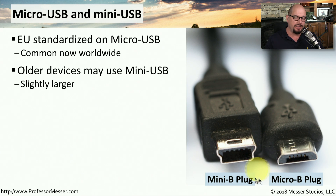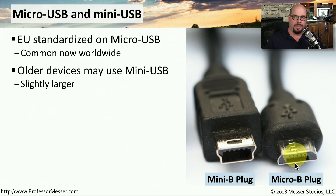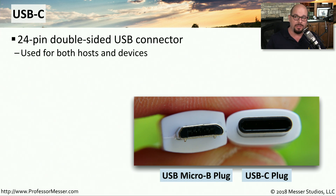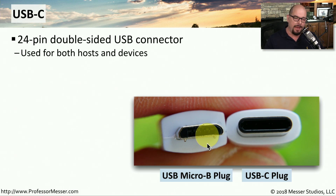If you have an older mobile device, you may find a mini B plug. The mini B plug is a little bit larger than the micro B plug. Newer mobile devices are using USB-C, which is a 24-pin USB connector. It's double-sided, which means it doesn't matter which side you plug it in — it will work just fine. It's about the same size as the older USB micro B plug, and you can see them next to each other on the screen here.